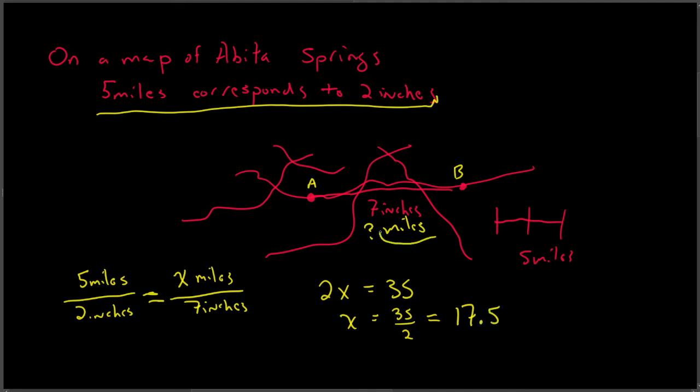And what was the unit for our unknown thing? It was miles. So the proportion gives us the ability to solve a problem like this where there's some type of scaling.